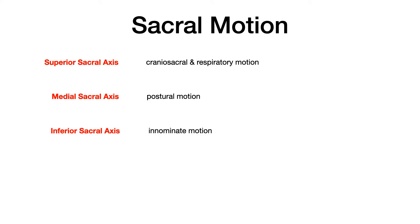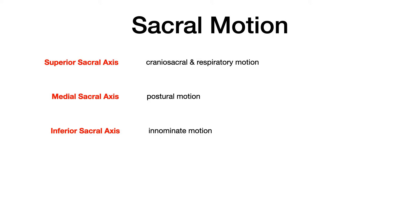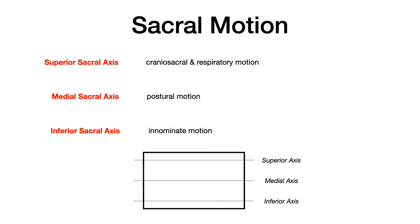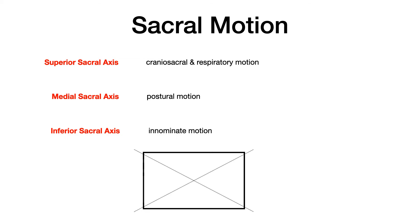Memorize these three axes and know what motion occurs at each. On COMLEX, you could be given a question describing an alteration in craniosacral mechanics and asked which axis — the answer is superior. A postural problem would be medial. Additionally, there are two oblique axes: the right oblique and left oblique axes. I'll cover these further in the upcoming video on sacral dysfunctions, but they're included here since we're discussing all axes in the pelvic/sacral region.